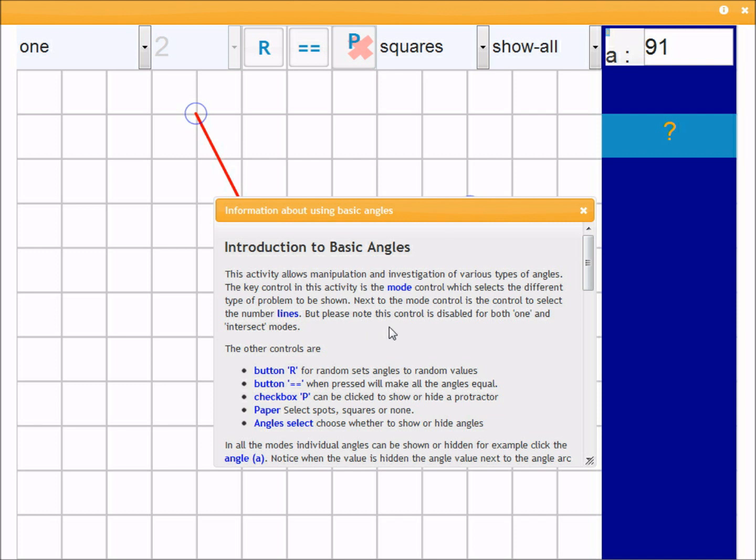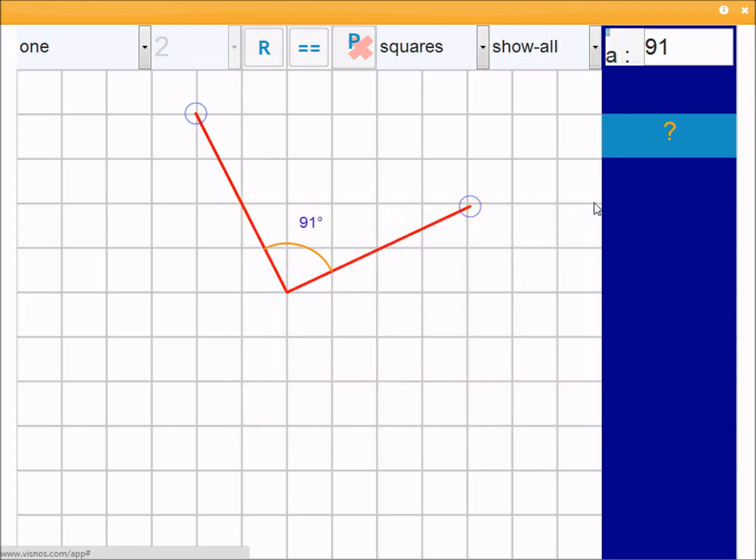This one's one of the more advanced ones because it actually tells you, points to the controls and what they're actually doing. So I'll close that. You can also close the activity by clicking the X, and normally there'll be a video icon here as well.